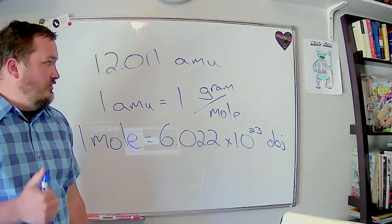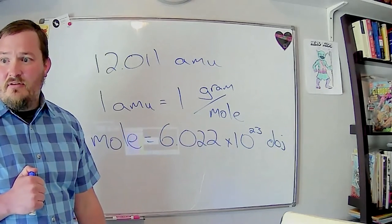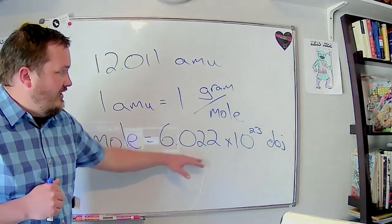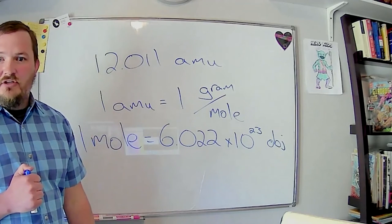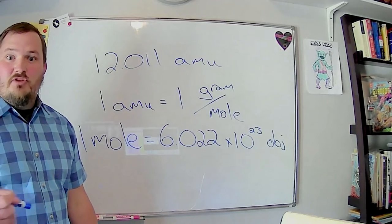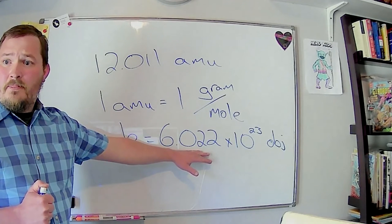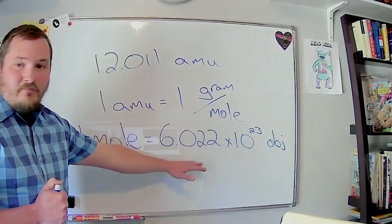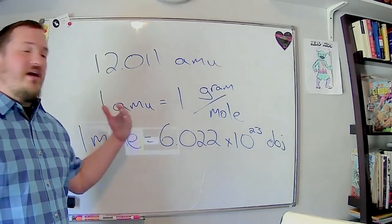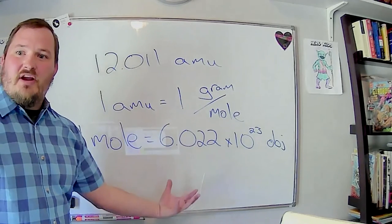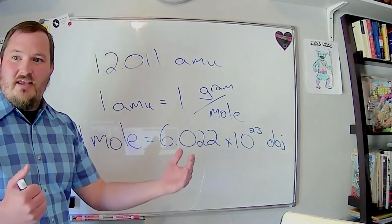A mole of eggs would be 6.022 × 10²³ eggs — it's just a way of counting. That number was chosen very carefully, originally based on how many atoms are in one gram of hydrogen. That's why hydrogen's atomic mass on the periodic table is really close to one — if you had a mole of hydrogen atoms, it would weigh one gram. We talk about moles of atoms or compounds because we can't measure individual atoms, but we can measure moles since it bridges the gap from something too tiny to see to something we can measure.